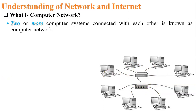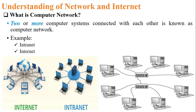There are different types of computer networks. The first one is intranet and the second one is internet. Intranet is the local network limited to one building, one floor, or two floors — one or two buildings connected with each other. Internet is a group of networks.